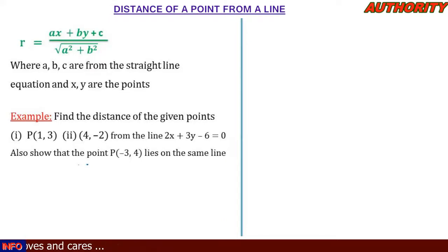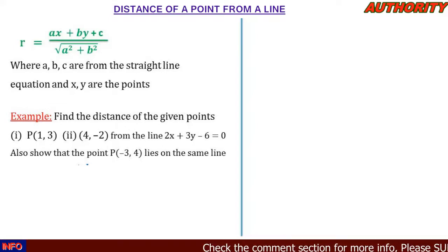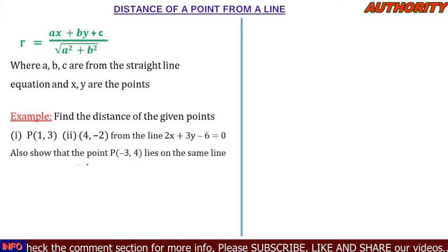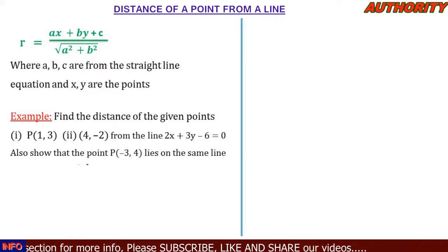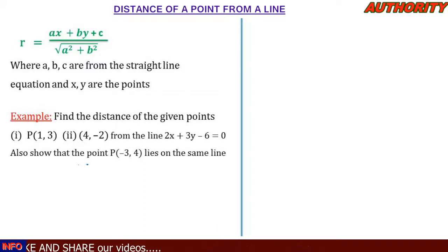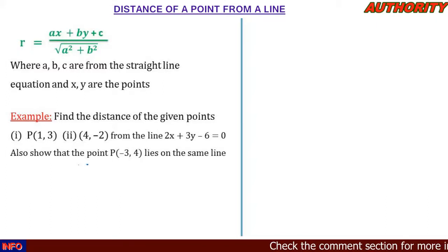Now let's look at this question: find the distance of the given points — the first point P(1, 3) and the second point P(4, -2) — from the line 2x plus 3y minus 6 equal to 0. Also show that the point P(-3, 4) lies on the same line.